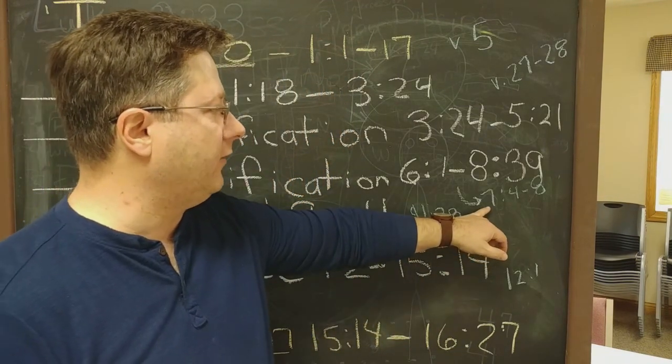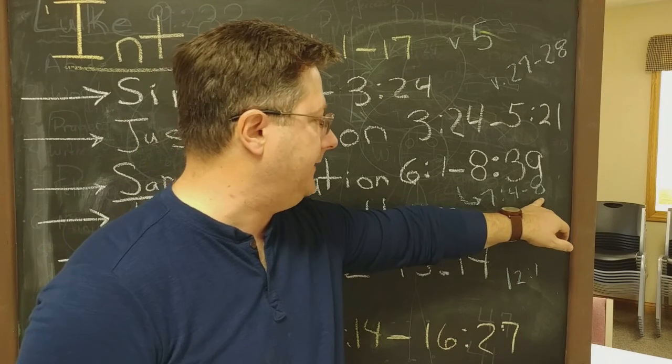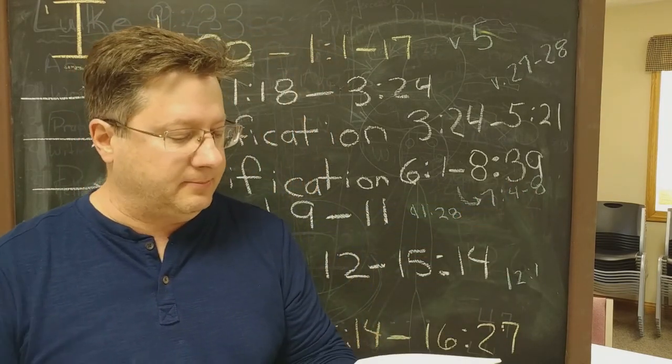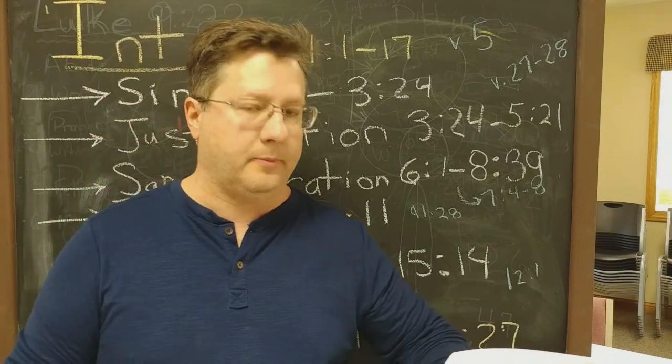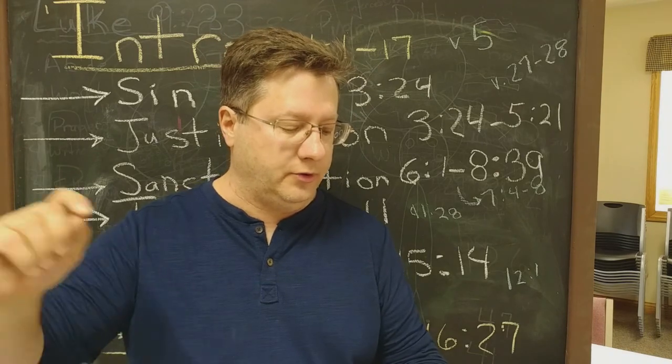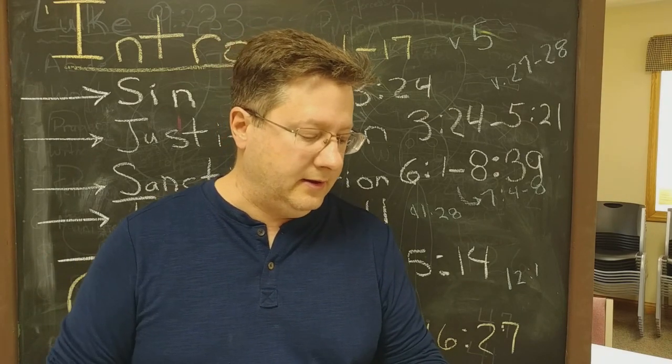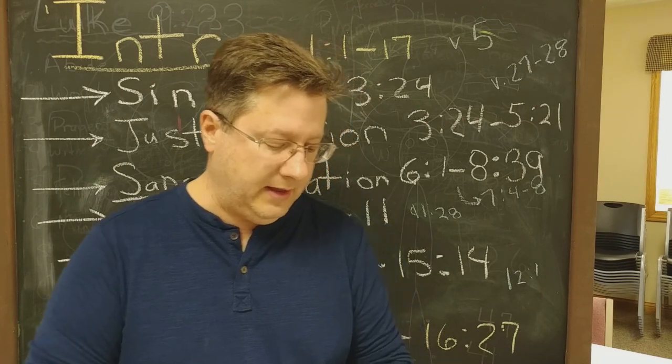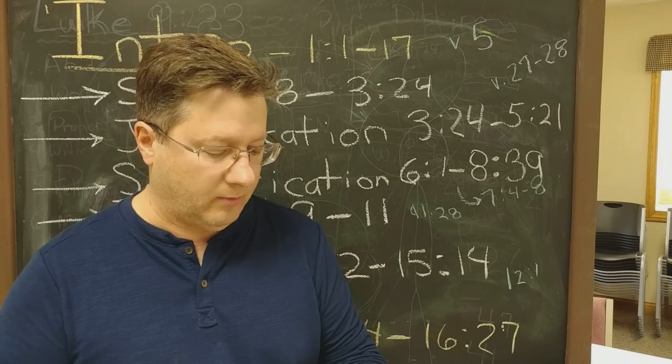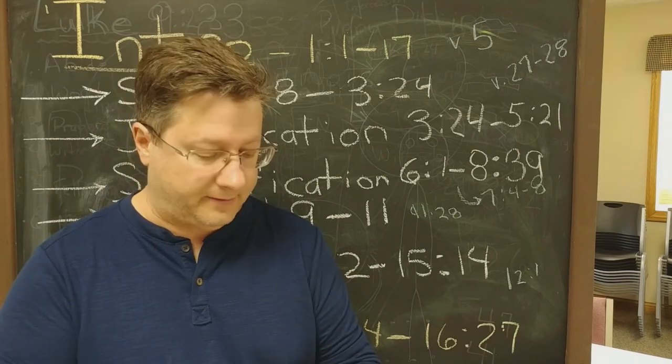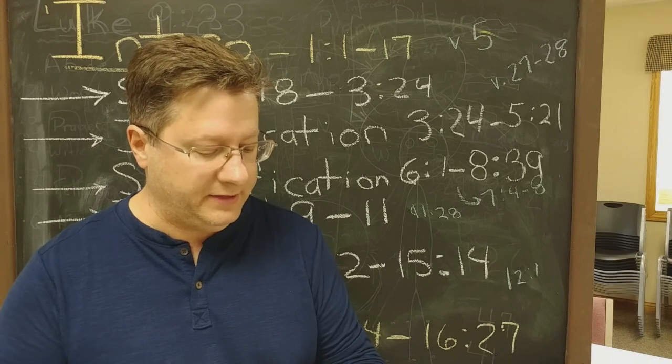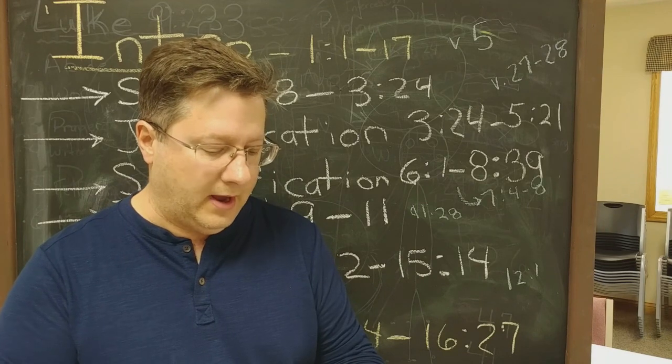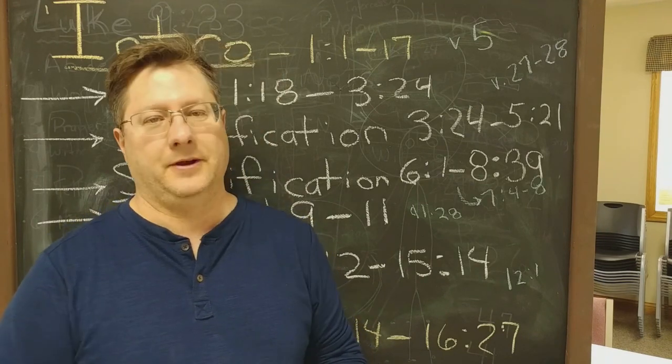The key verses in chapter 7 verse 4 through 6. He says my brothers you have died to the law through the body of Christ so that you may belong to another, to him who has been raised from the dead in order that we may bear fruit for God. For while we were living in the flesh our sinful passions were aroused by the law to work in our members to bear fruit for death. But now we are released from the law having died to that which held us captive so that we serve in the new way of the spirit and not in the old way of the written code.